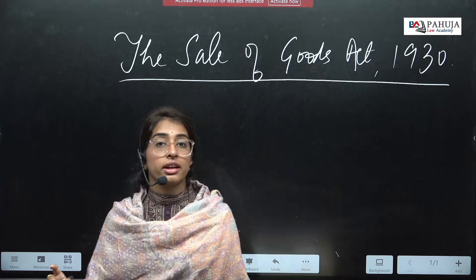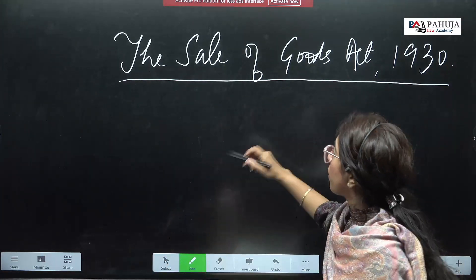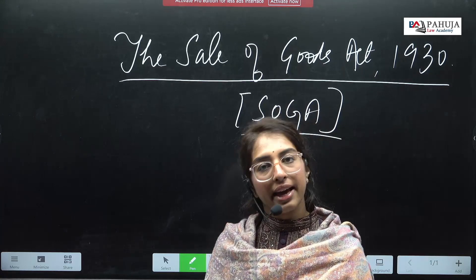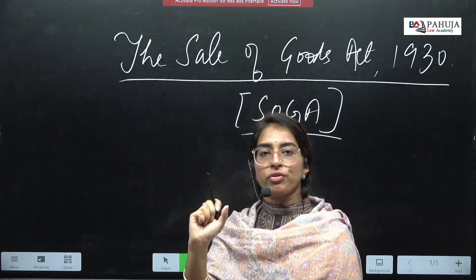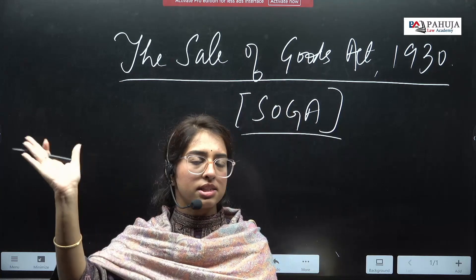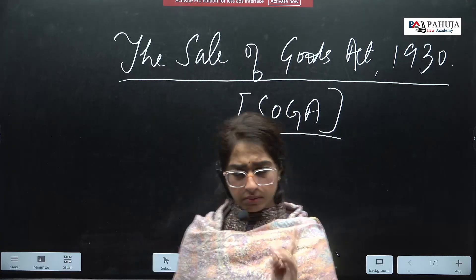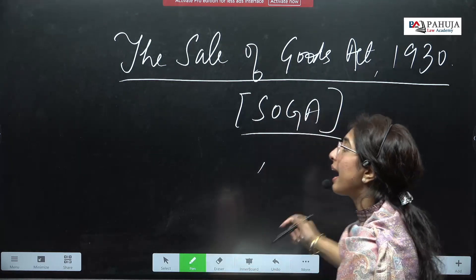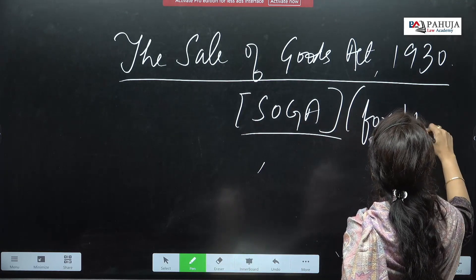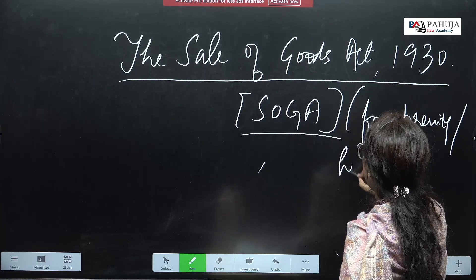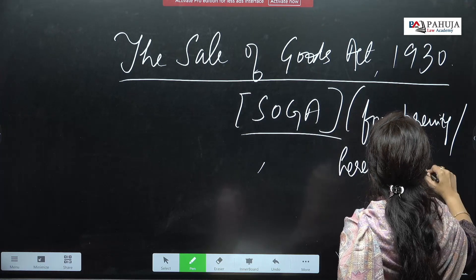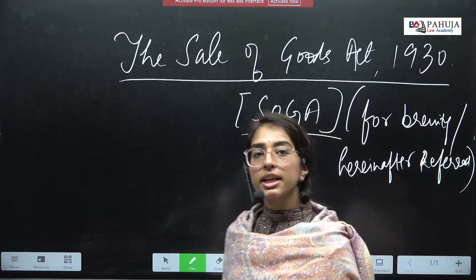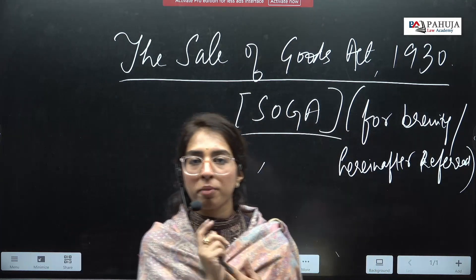Why am I using the word SOGA? Why am I using a short form? Yes, I can use it. I can use the short form SOGA, IPC, TPA, CRPC, CPC even in my main answer writing. But when I am using the short form in my answer, I have to write 'for brevity' or 'hereinafter referred' along with the short form that I am using.